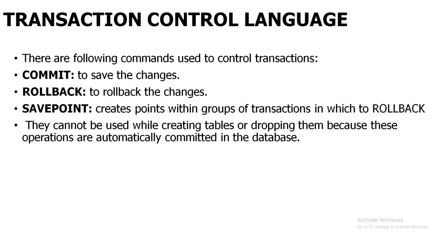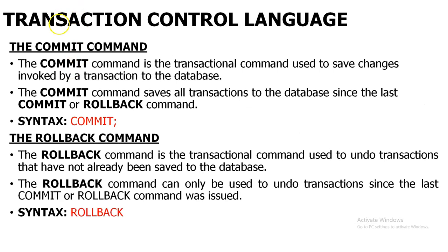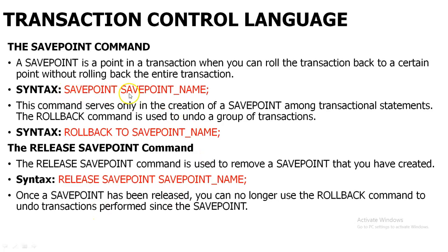We will be discussing that in detail. The syntax for commit command is just 'commit'. For rollback, the syntax is 'rollback'. For savepoint, you will use the keyword 'savepoint' followed by the savepoint name. When using rollback for a savepoint, the syntax is 'rollback to savepoint_name'.